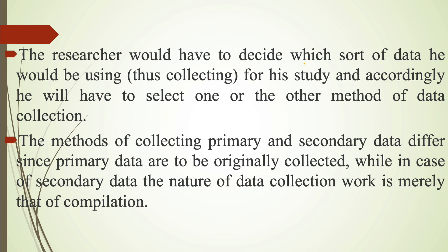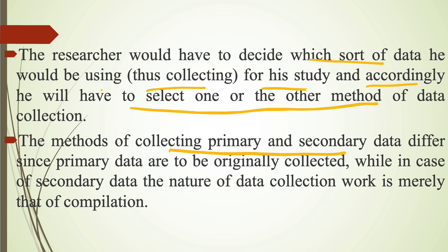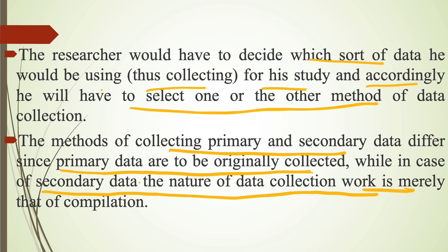The researcher must decide which sort of data he will be using and accordingly select the appropriate method for data collection. The methods of collecting primary and secondary data differ: primary data must be originally collected, while in the case of secondary data, the nature of collection work is merely that of compilation — compiling information already available in different forms such as books and magazines.